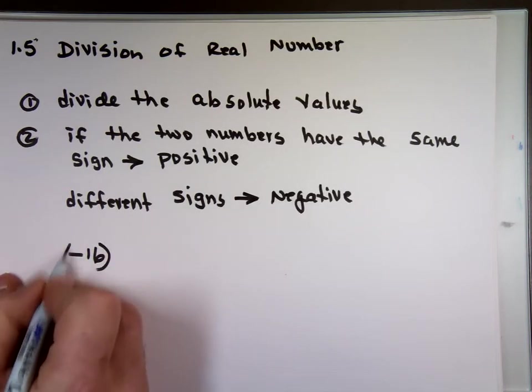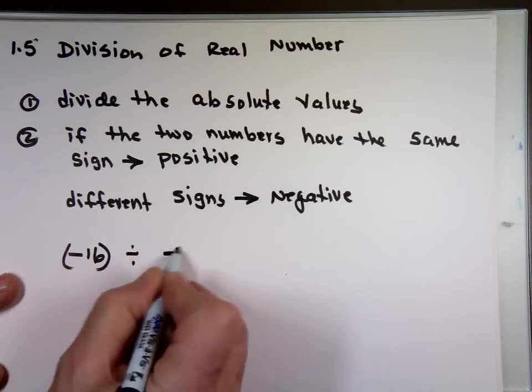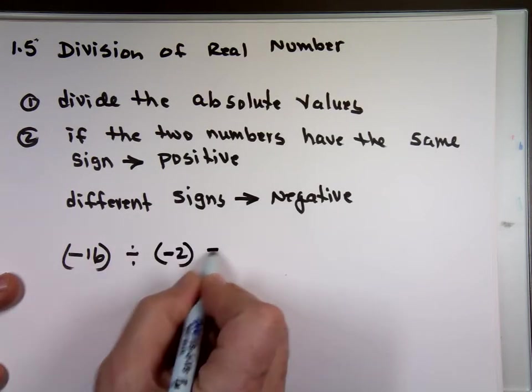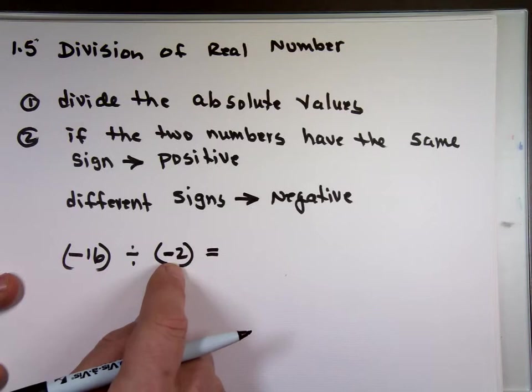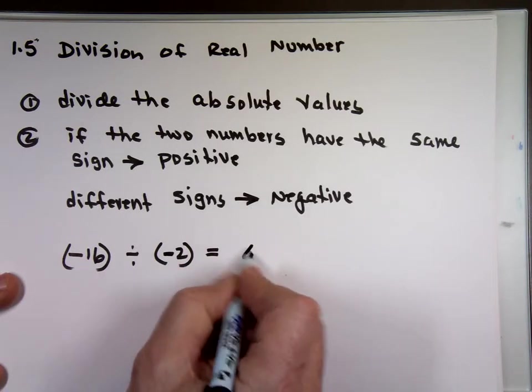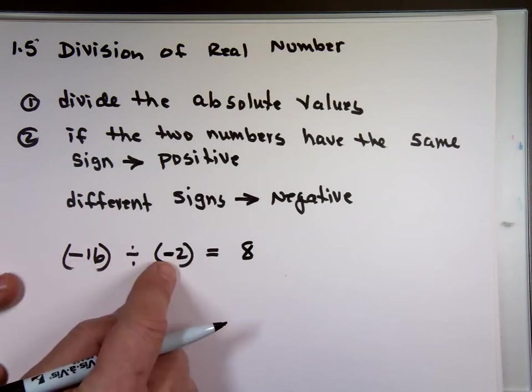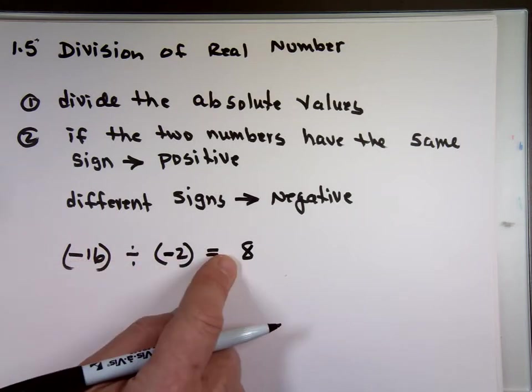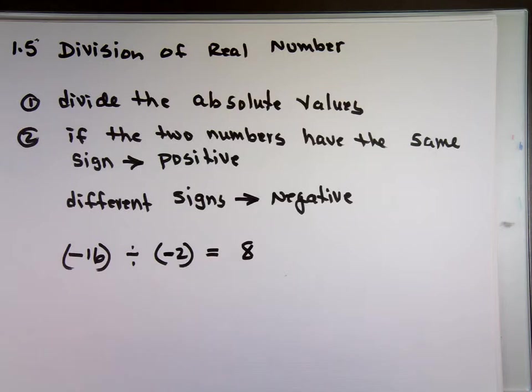What's negative 16 divided by negative two? Divide the absolute values. 16 divided by two, which is what? Eight. Do both of these numbers have the same sign? Positive. You don't put the plus if it's positive. So it's eight.